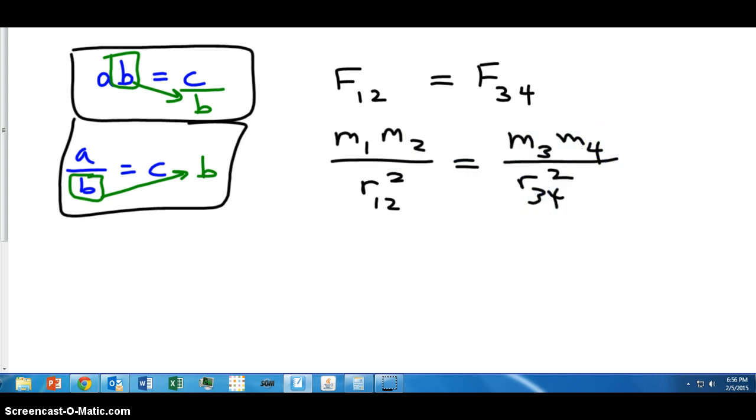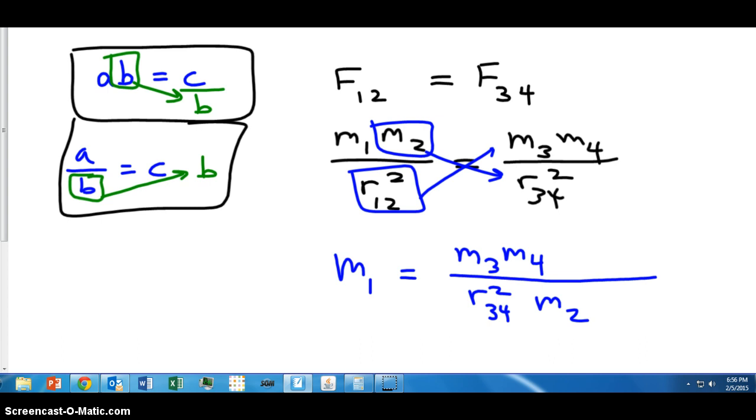Now, what I want to do is I want to isolate m1. So, I'm going to write it alone on the left side. It's already in the numerator, so I can simply get rid of the things that are on the left with it. I'm going to isolate m1. I'm going to put a long fraction bar on the right. Already on the right, I have m3, m4, and r34 squared. Then I've got an m2, which is going to go down, and an r12 squared, which will go up. And now, I've isolated m1.